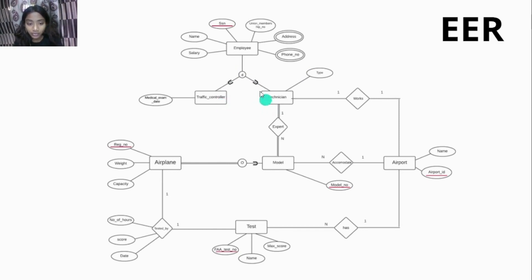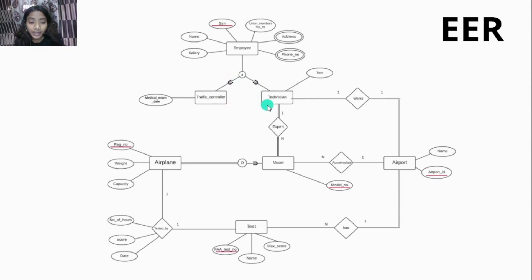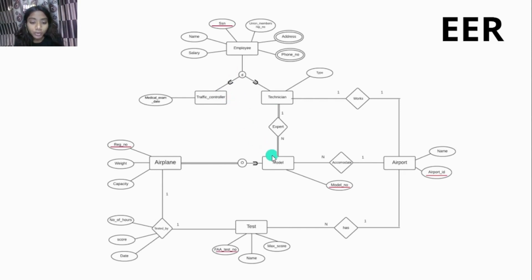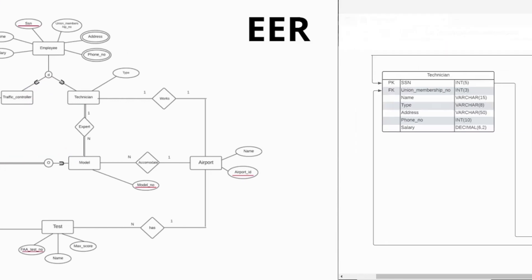That is, a technician cannot be a traffic controller and has to hold one position only at a time. If it were an 'O' here, it would mean overlapping constraint — the traffic controller could also be a technician, meaning an entity can hold more than one position at a time and can be a member of more than one subclass. 'U' here means union, which means that technician and traffic controller subclasses belong to the employee superclass, and model belongs to airplane. So this was the EER diagram of our case study.